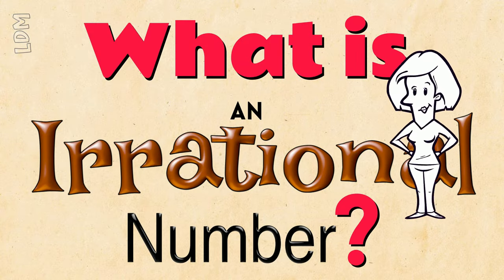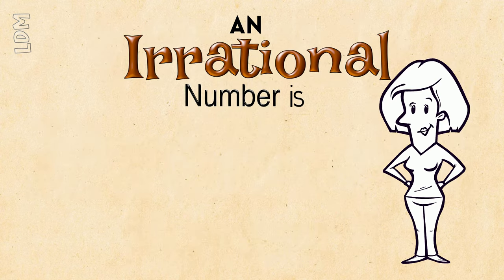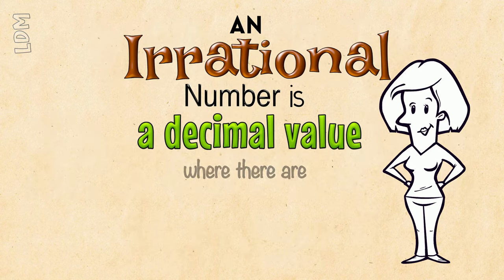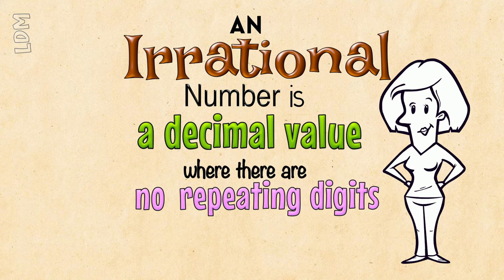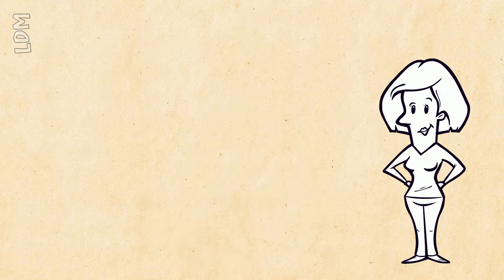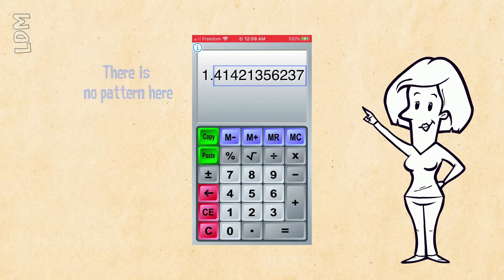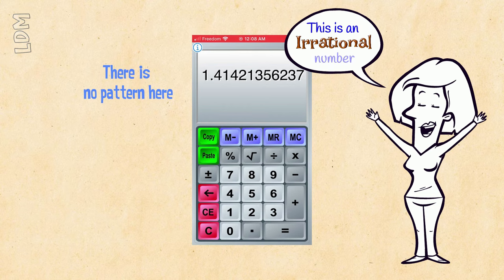First of all, I want you to know that they are, in fact, easy to spot. An irrational number is a decimal value where there are no repeating digits or period of digits. I'm going to show you one now on the calculator. We put in 2 and hit square root and look at that decimal! There's no pattern here so this is an irrational number!